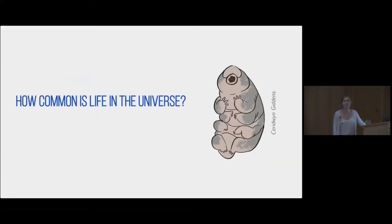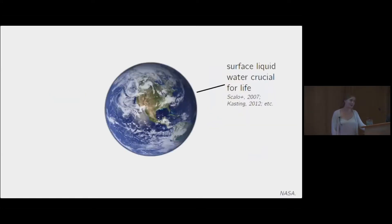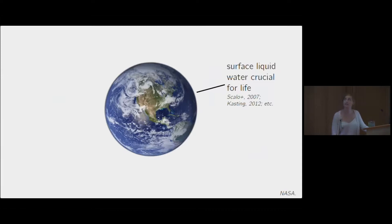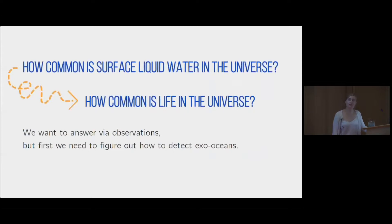Starting big picture, one of the big sparkly questions driving exoplanet science is: how common is life in the universe? Traditionally — though we might have to rethink this a bit from Sukrit's talk about the water paradox — we consider surface liquid water pretty crucial for the development of life because of its cosmochemical abundance and because it's a really great solvent to get organic materials started. So one way to think about how common life is in the universe is to ask how common is surface liquid water?